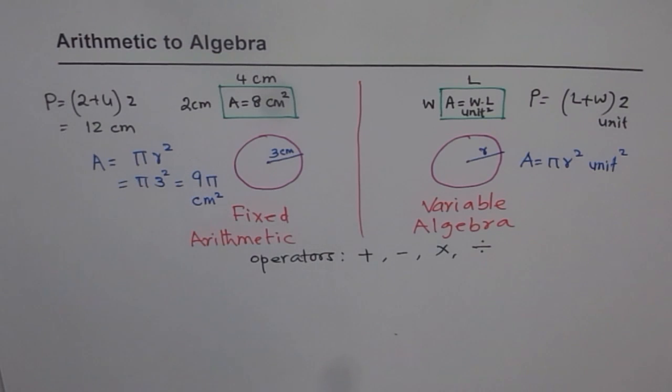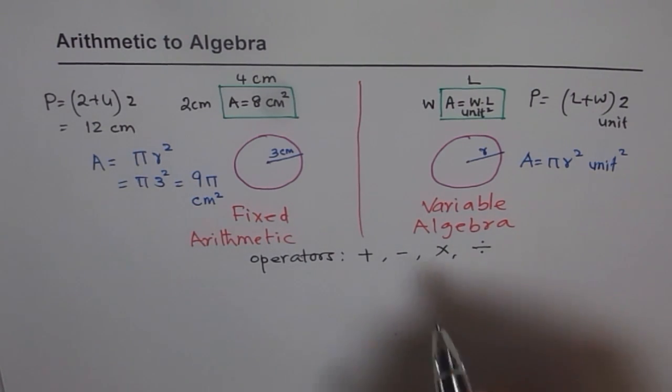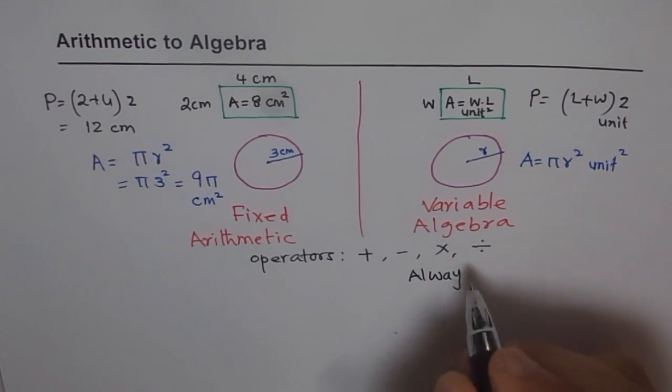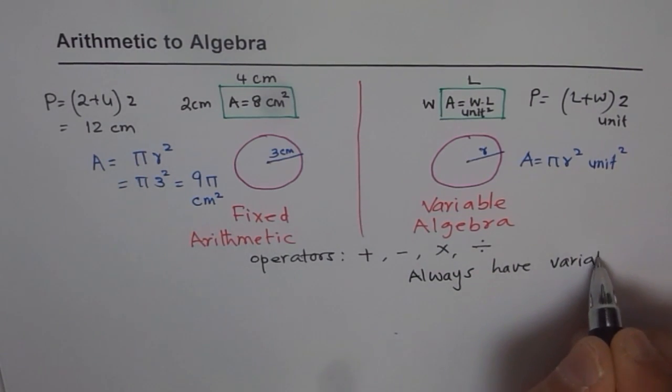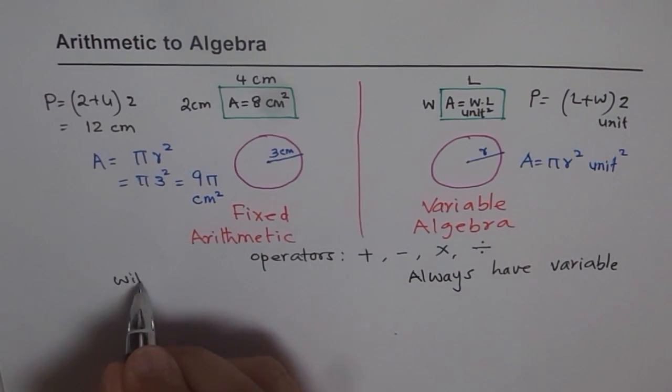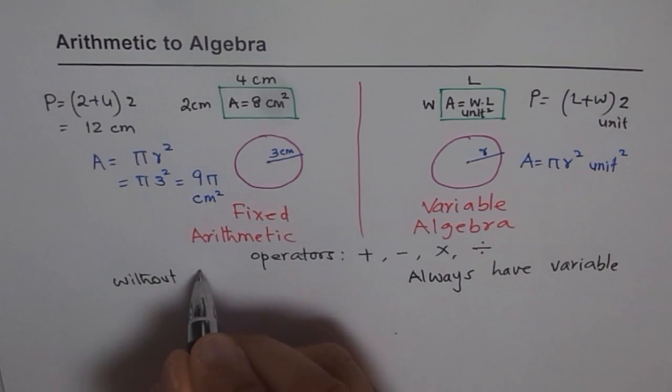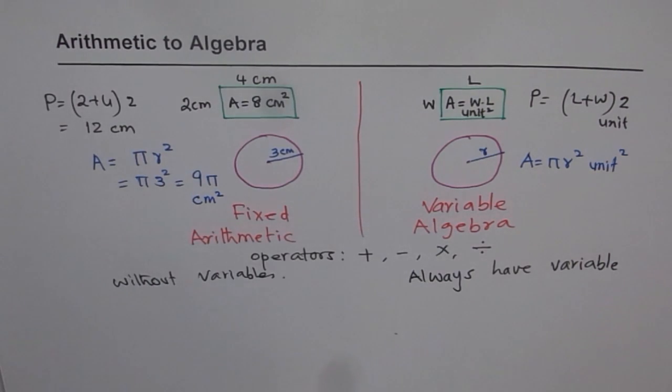So the only difference which you should note here is that in algebra, we always have a variable. So that is kind of a must. Always have variable. That is kind of critical for us. And here arithmetic is without variables. So that is one major difference.